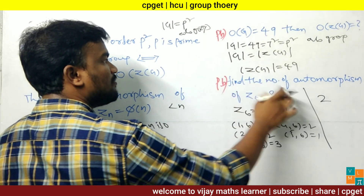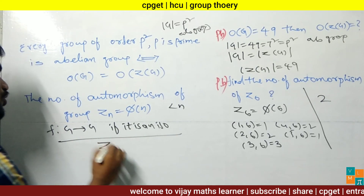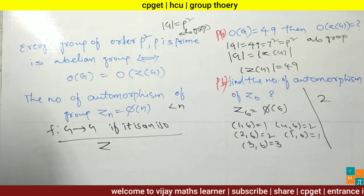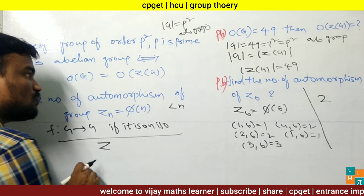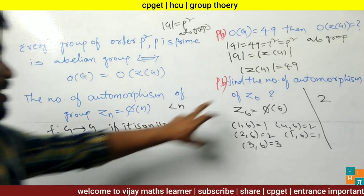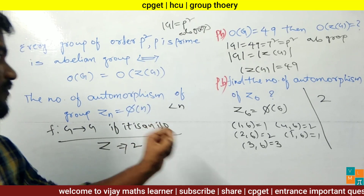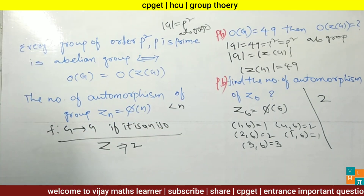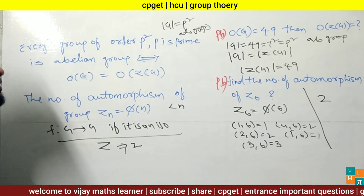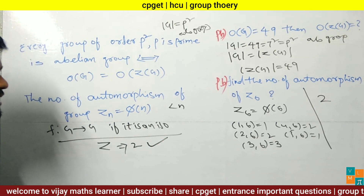If the question is to find the number of automorphisms of the group Z (integers): Z₆ is a finite cyclic group, but Z is an infinite cyclic group. For a finite cyclic group we use the formula φ(n). For an infinite cyclic group, the number of automorphisms of Z is always 2.